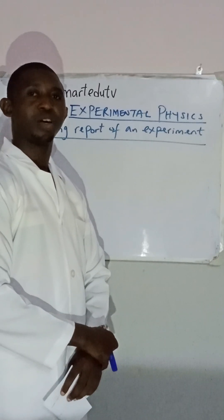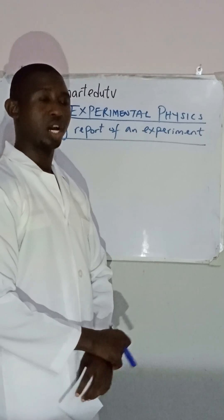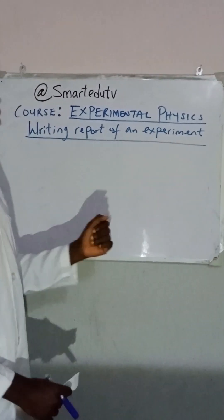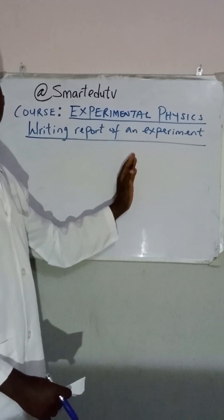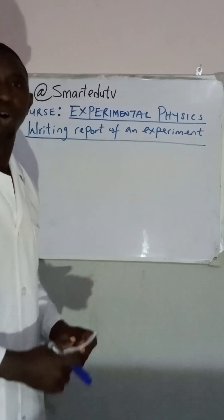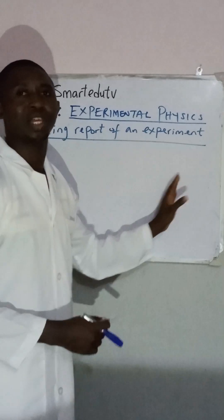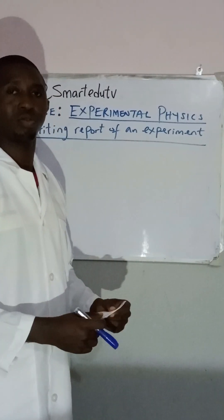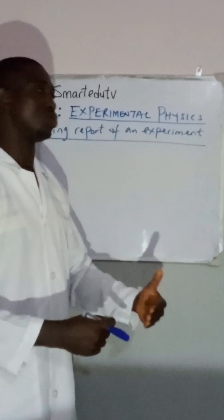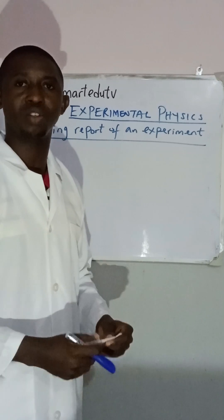Hello viewers, welcome back to my channel. Today we are going to be looking at experimental physics, and the topic of discussion is writing the report of an experiment. We want to look at how to write a report of an experiment. This is very important. After we have taken the lab work, after we have performed the experiment, the next thing to do is to report that experiment. How do we report an experiment?